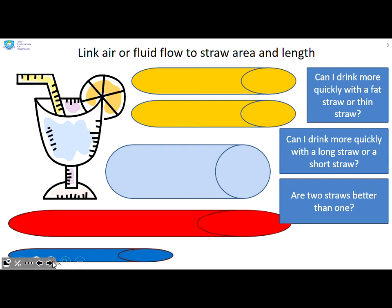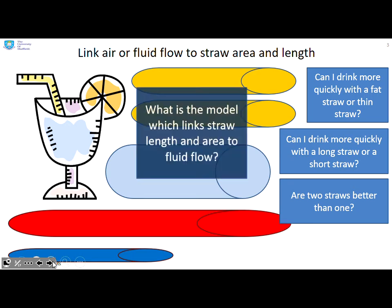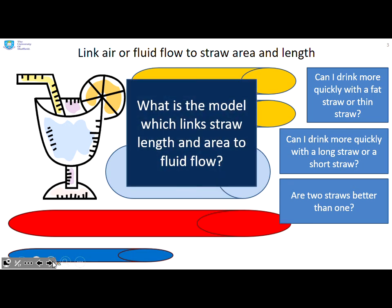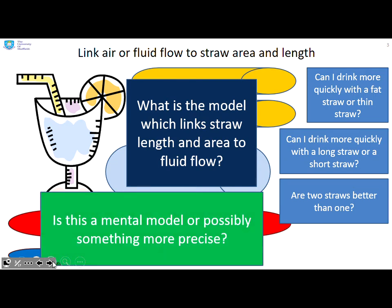Are two straws better than one? And what is the model which we're going to form which links the straw length and area to the fluid flow? I want you to do this by yourself and convince yourself you understand what's going on. Is this a mental model or possibly could it be something more precise?